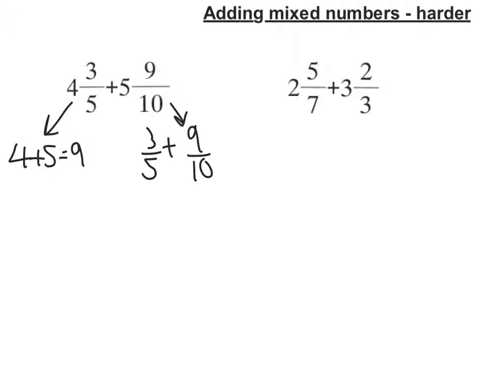So when adding fractions, you've got to make sure you have a common denominator. So the lowest common denominator, 5 and 10, is 10.